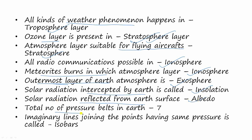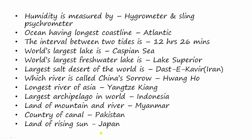The total number of pressure belts on earth is seven. The imaginary line that joins points having the same pressure is called isobars. Humidity is measured by a hygrometer together with a sling psychrometer.